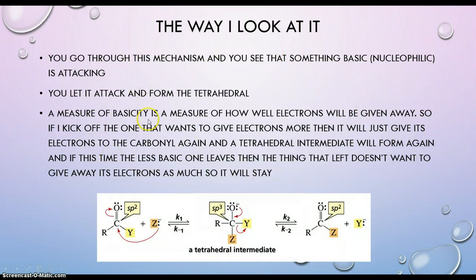So the way I look at it is you go through this mechanism and you see that something basic, that's your Z minus, is attacking. Your nucleophile is going to be a base. You let it attack forming the tetrahedral intermediate. A measure of basicity is a measure of how well electrons will be given away. So if you have something that is more basic than something else, your Z wants to give these electrons more than these electrons are given to this carbonyl.